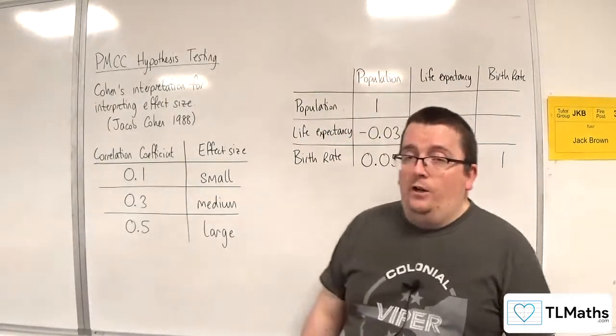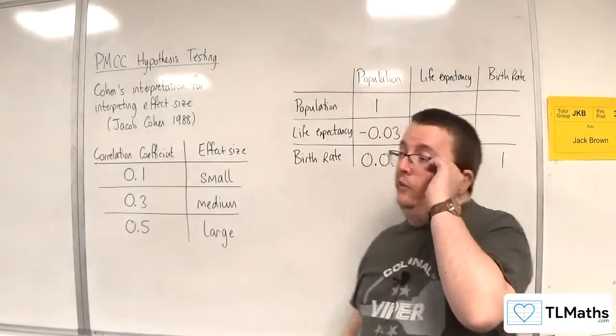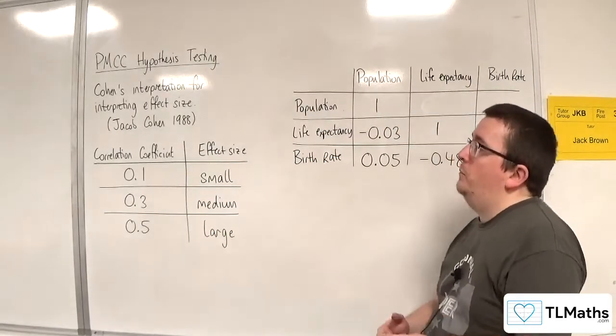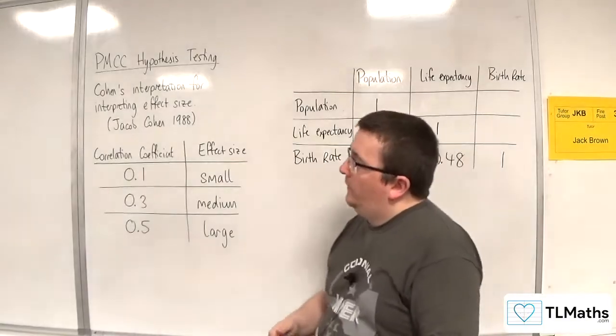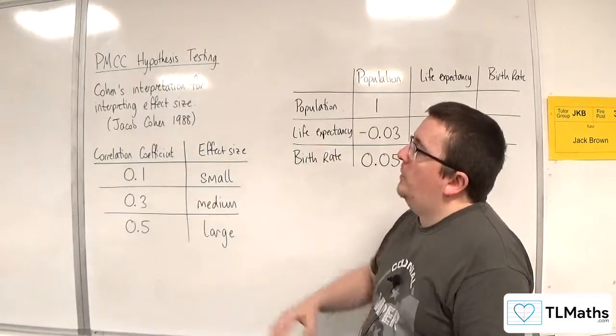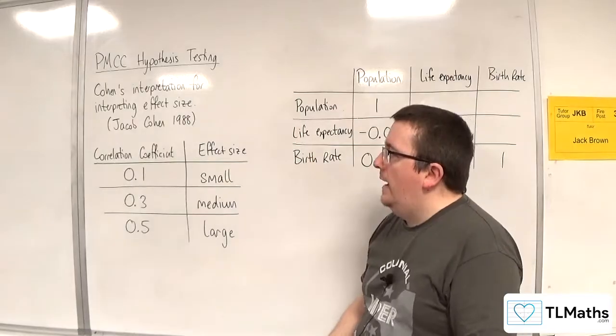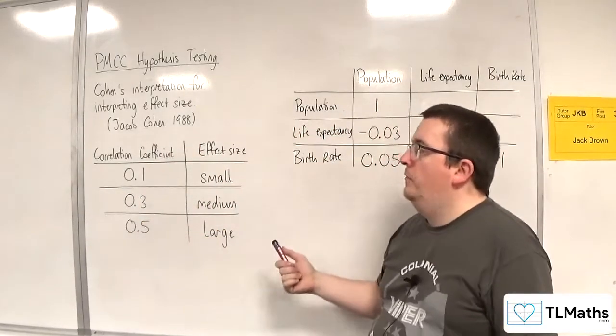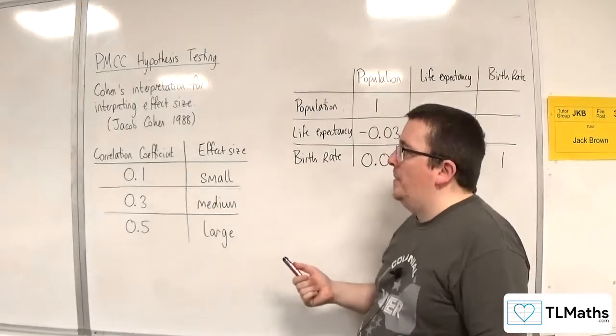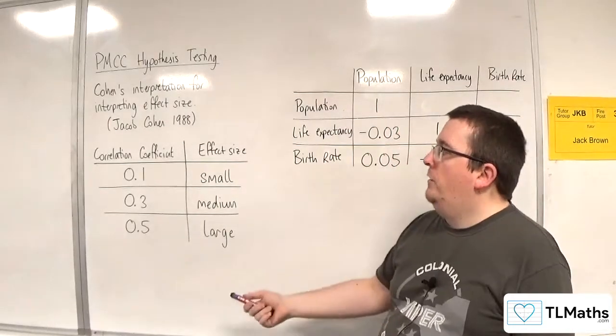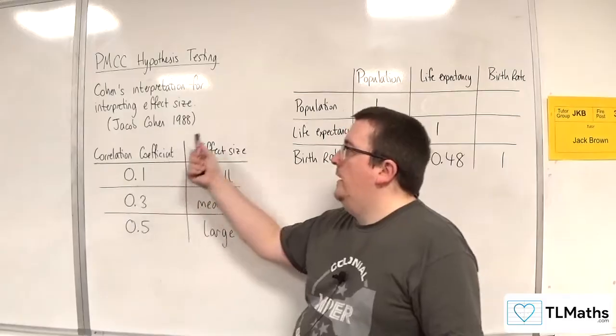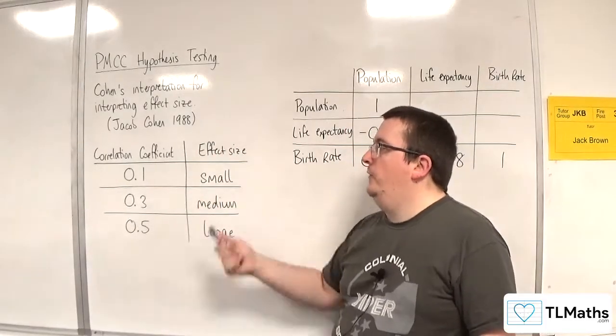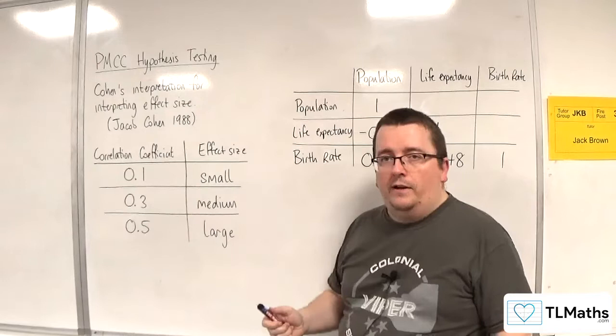So how do we deal with those situations? Well, this is where we bring in Cohen's interpretation for interpreting effect size, which comes from Jacob Cohen in 1988. And these are the values that are utilized by OCR MEI. The correlation coefficient of 0.1 is considered a small effect size, 0.3 is a medium, and 0.5 is large.